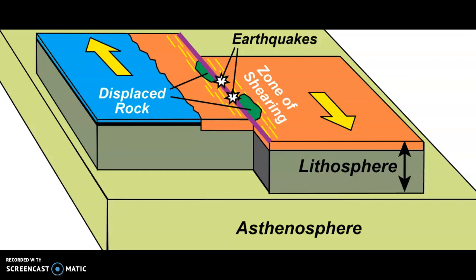If you look at this particular image on your screen, we can actually see two pieces of crust or plates — one on the left-hand side, one on the right-hand side. They can basically be moving in opposite directions. These plates are not converging, meaning they are not moving towards each other, and they are not diverging — not moving away from each other. What is happening here is that they are simply sliding past each other.